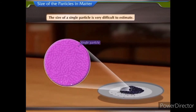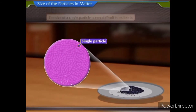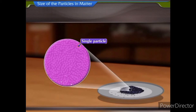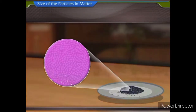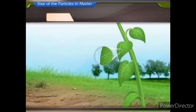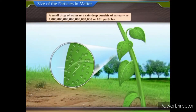The size of a single particle is very difficult to estimate. They are small beyond our imagination. For instance, a small drop of water or a raindrop consists of as many as 10²¹ particles.